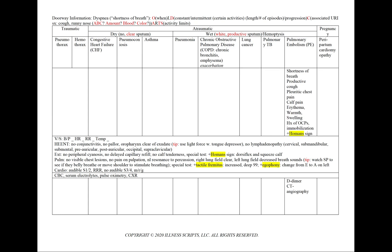In pulmonary embolism, we can see shortness of breath with a productive cough, pleuritic chest pain, calf pain, erythema, warmth, and swelling, and a history of oral contraceptives or immobilization. And as we'll see in our physical exam, a positive Homan's sign. We'll add a D-dimer and CT angiography.